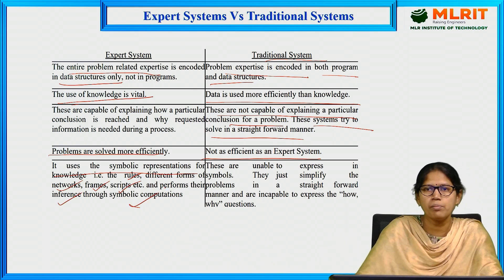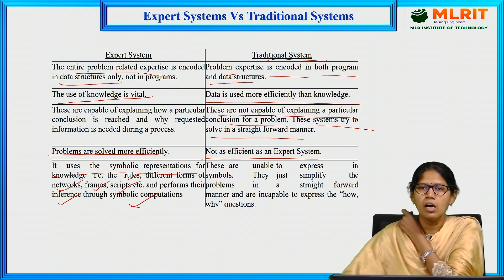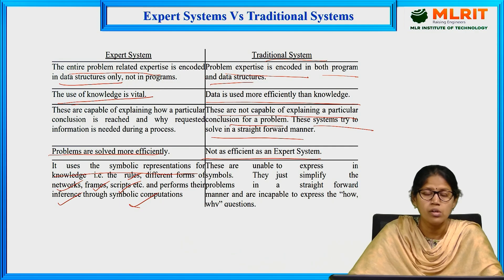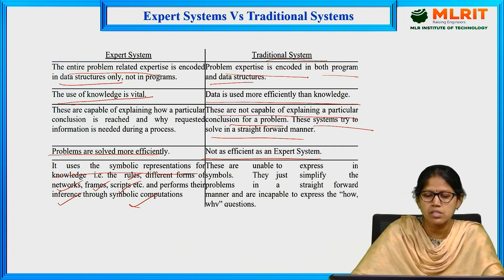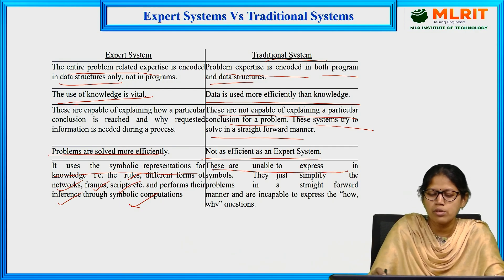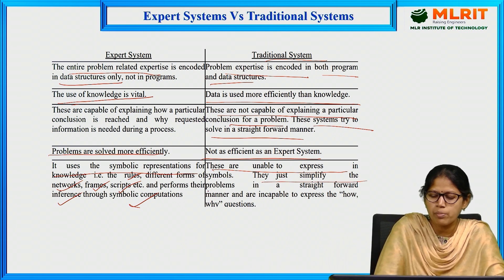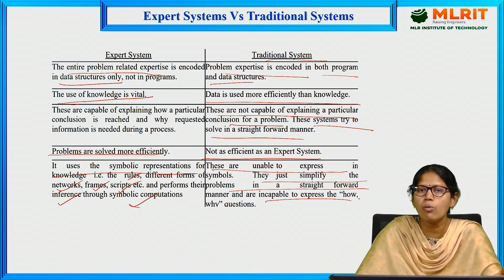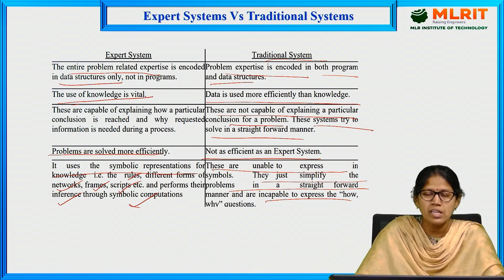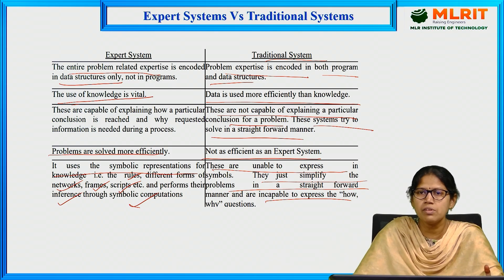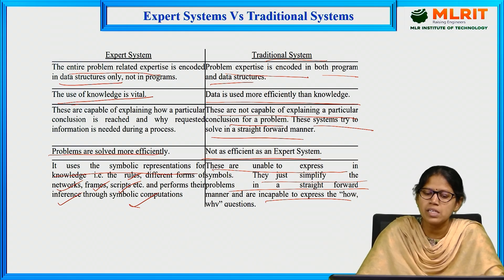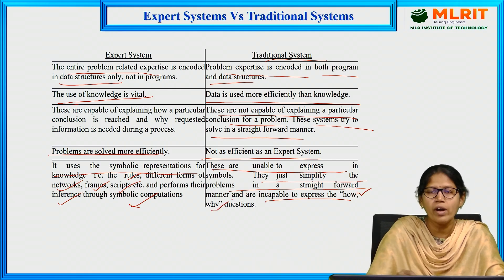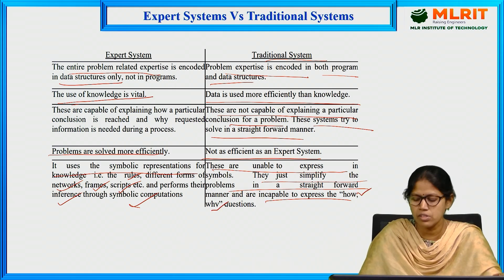We have already seen how knowledge is represented as semantic networks, extended semantic networks, and frames. Traditional systems are unable to express knowledge in symbols — they simplify problems in a straightforward manner and are incapable of expressing how and why questions. Expert systems provide solutions by explaining how a result was reached, whereas traditional systems are unable to answer how and why questions.